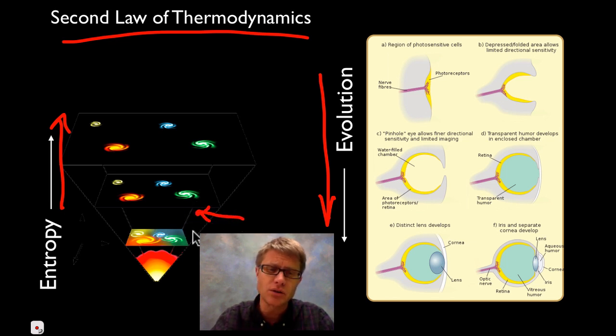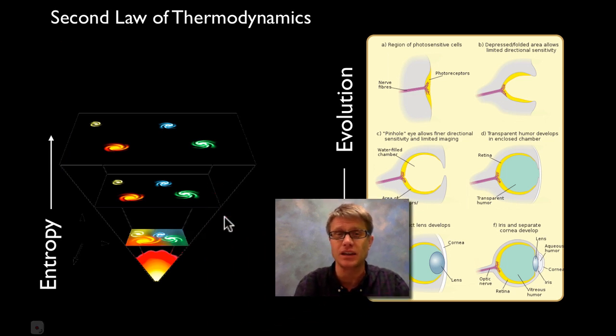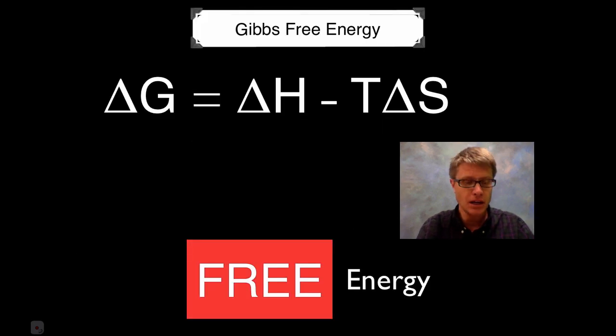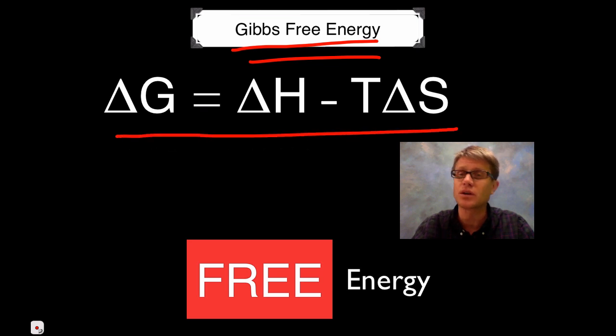We're simply one part of the universe, so we can increase order in one area by decreasing the order of the universe around it. That's basically the second law of thermodynamics. Next we come to the idea of Gibbs free energy.